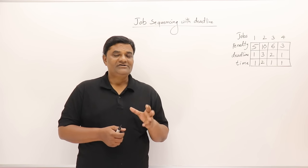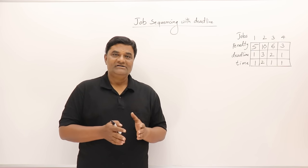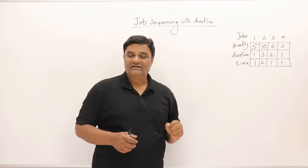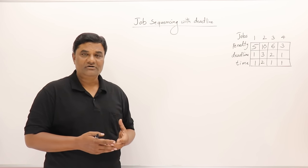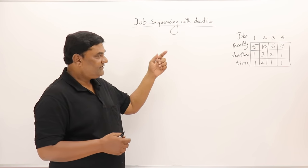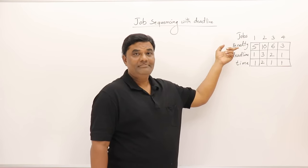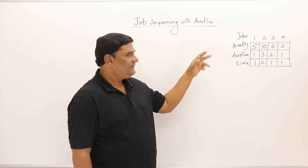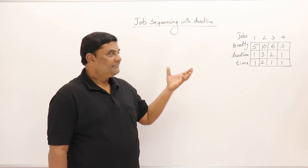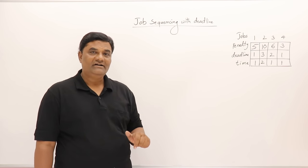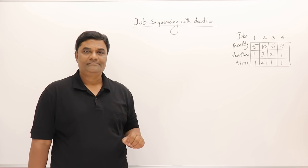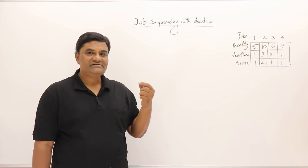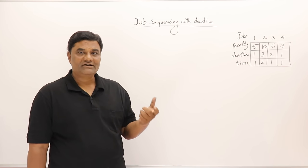Branch and bound is useful for solving minimization problems; it cannot solve maximization. Job sequencing with deadlines is a maximization problem where profits are given for jobs and we want the maximum profit. So we have converted the problem — instead of profit, we are taking penalty. Penalty means we lose rather than gain. If we minimize the penalty, the profit is automatically maximized.